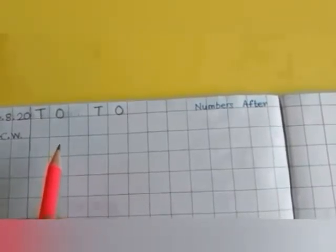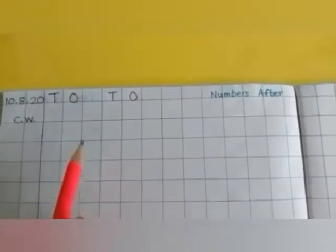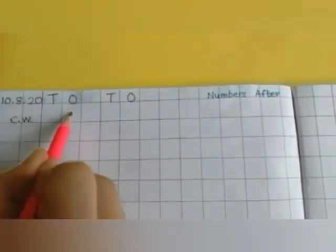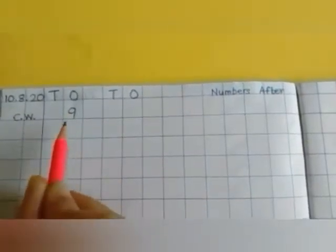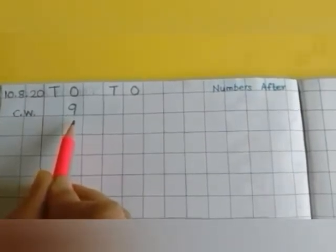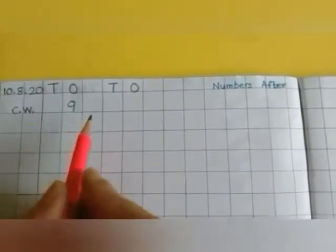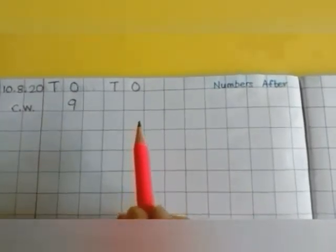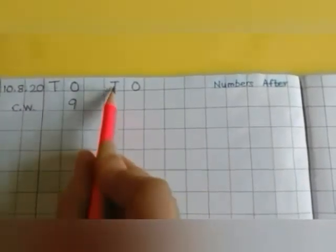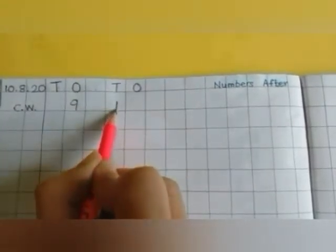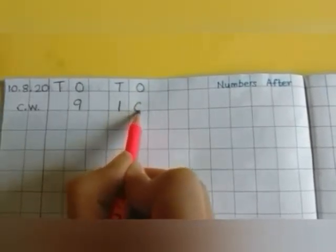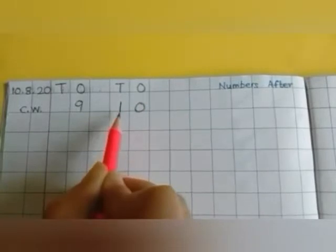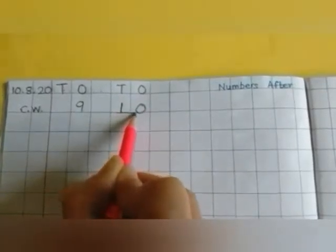Our first number is number 9. Number 9 is a single number, so we will write number 9 below the 1's place, meaning below O. So below the first O, write number 9. Now tell me, which number comes after number 9? Number 10. In number 10, there are two digits, so we will write number 1 below the 10's place, meaning below T, and number 0 below the 1's place, meaning below O. And put a small sleeping line below the number.